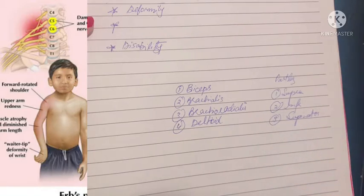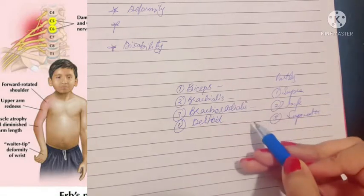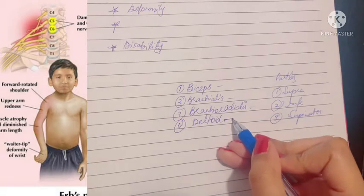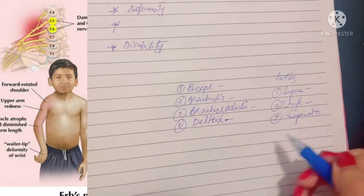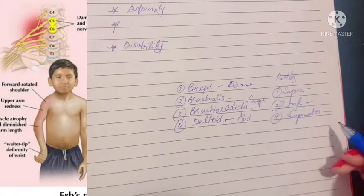What are the functions of these muscles? Biceps causes flexion of the forearm. Brachialis and brachioradialis cause supination of the forearm. Deltoid, supraspinatus, and infraspinatus are responsible for abduction. Supinator also causes supination. So overall, when these are damaged, what is the deformity?